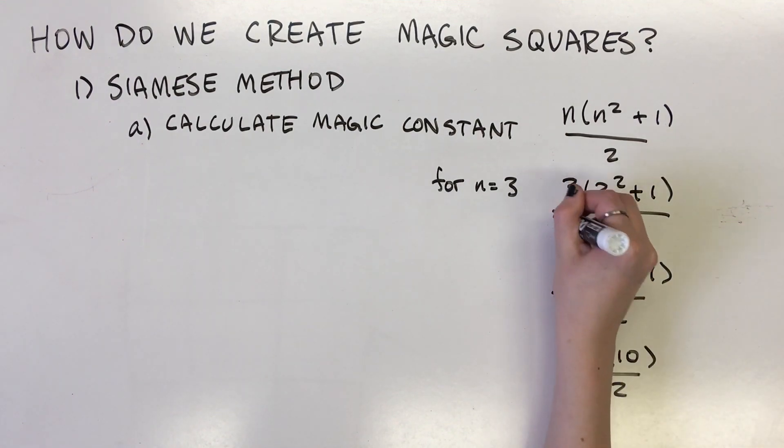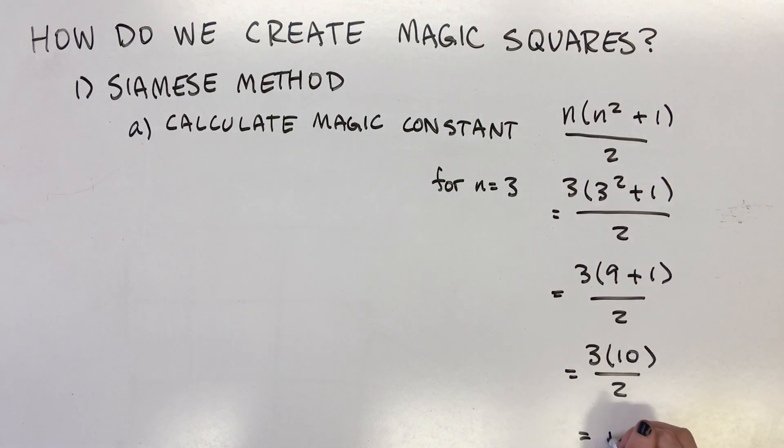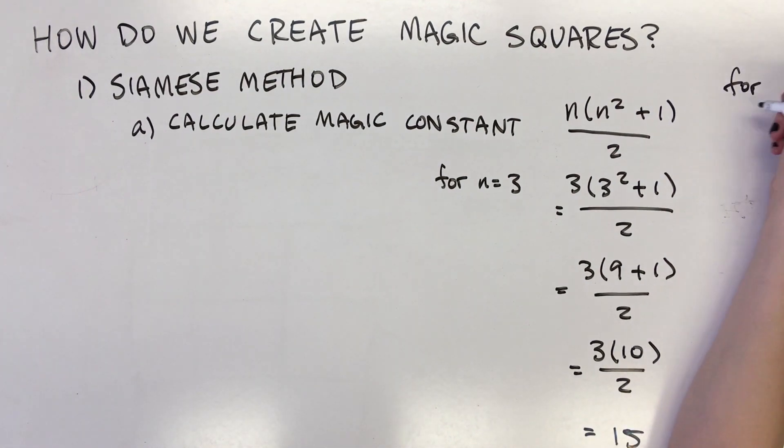The magic constant for a 3 by 3 square is thus 15. All the rows, columns, and diagonals must add up to 15.